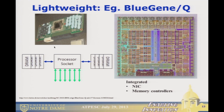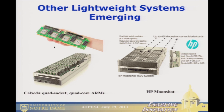Blue Gene Q is the last Blue Gene IBM has announced. However, this is not the death of lightweight architectures. There are others beginning to appear — things like Calxeda-like designs with lots of multi-core ARM chips and DIMMs of memory, and HP's Moonshot project with small cards with processors and memory. I don't know how those will play out, but they're still a viable architecture class.